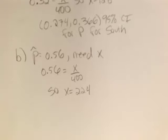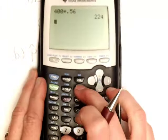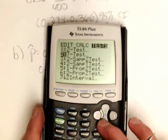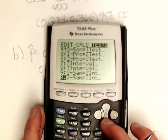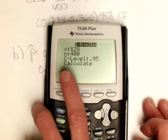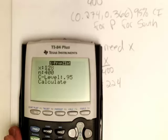So again, I can go ahead and go directly to my calculator by going to STAT, right arrow over to Tests, and scroll to one proportion z interval. And I can put in my number of successes. So I calculated that to be 224. My sample size is the same, and my level of confidence is the same.